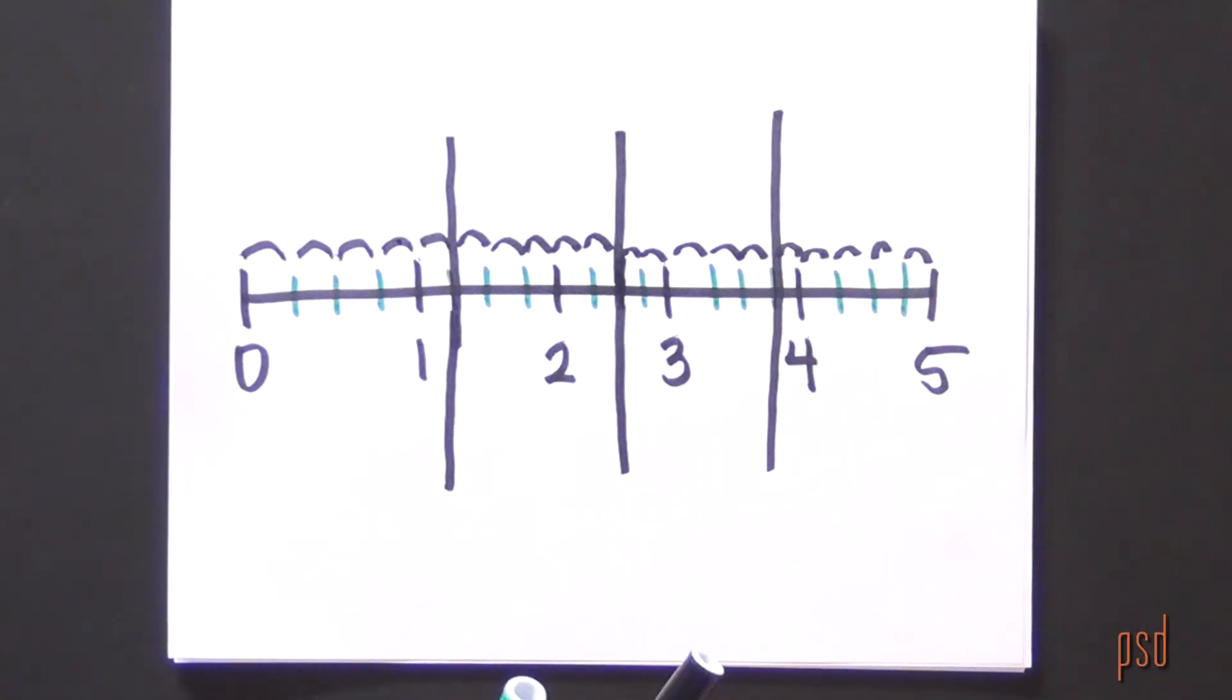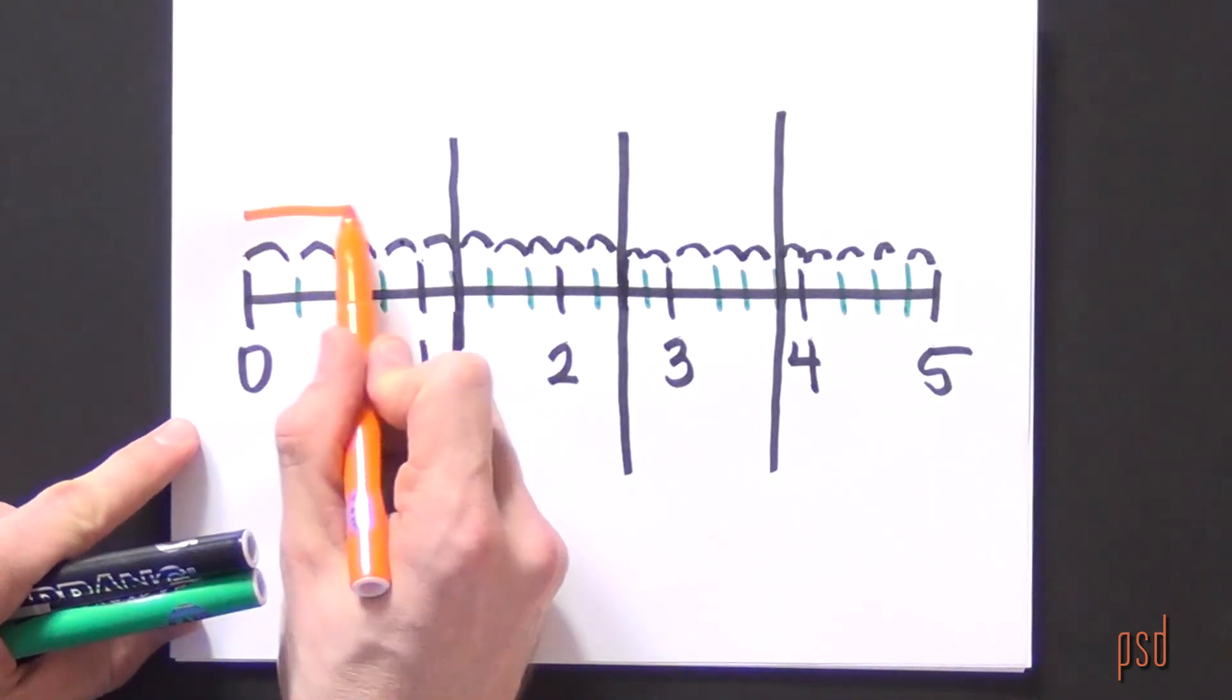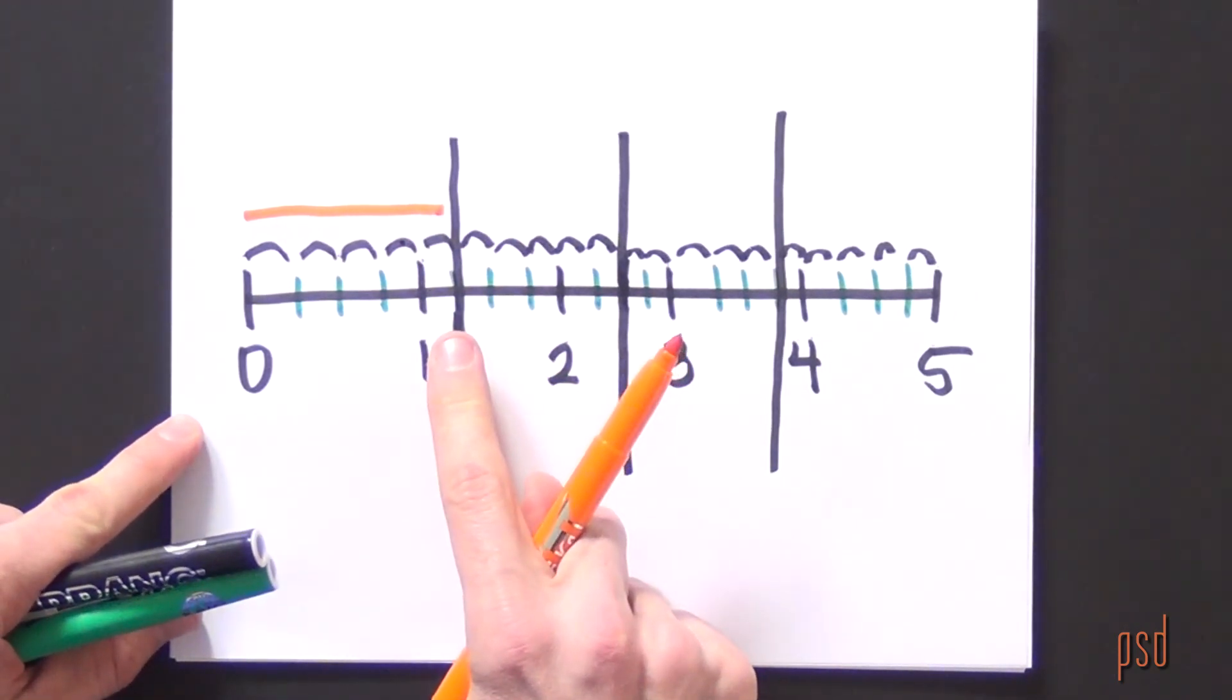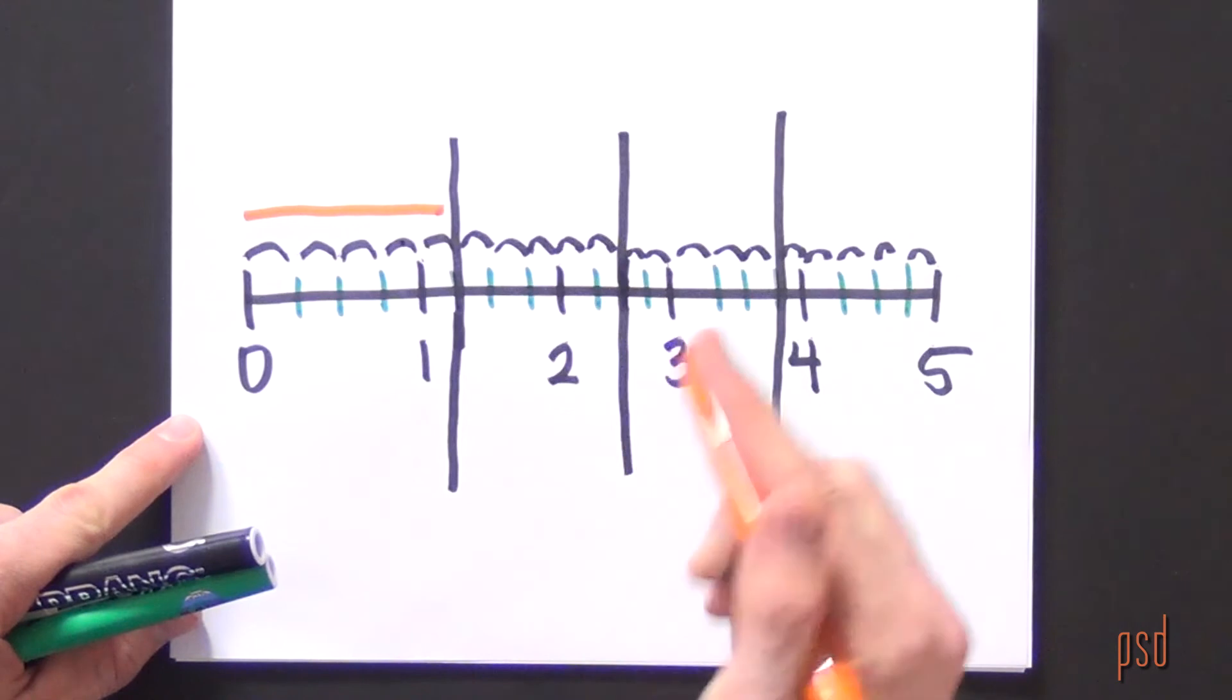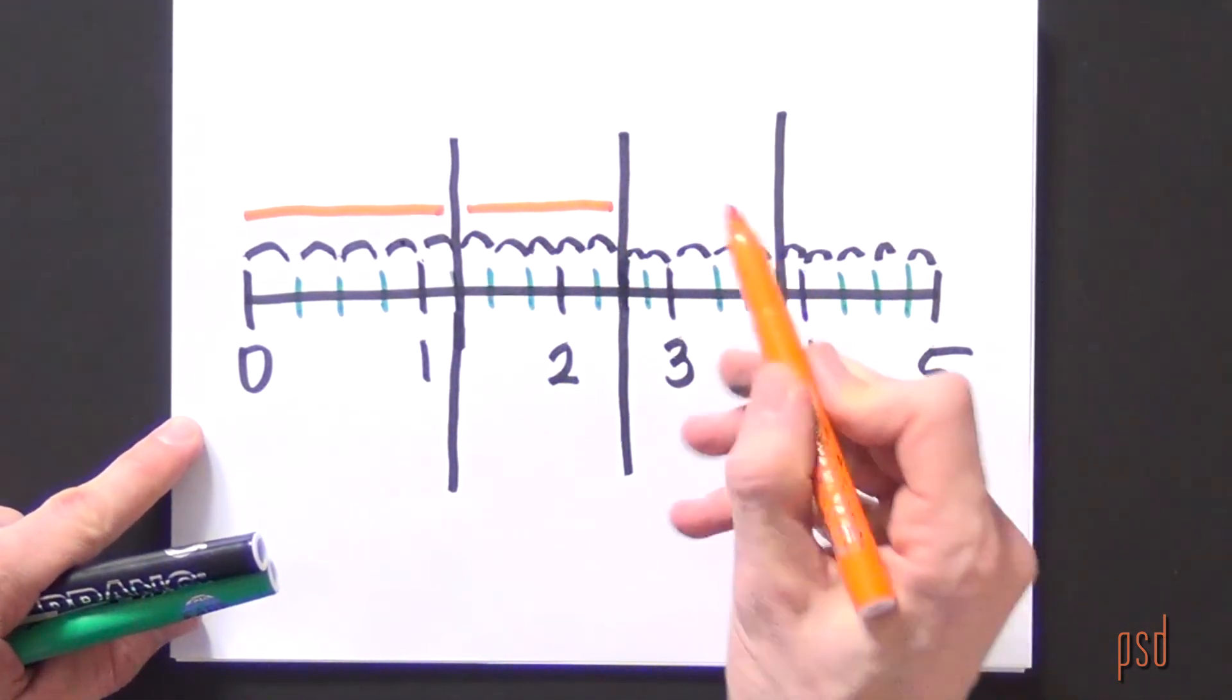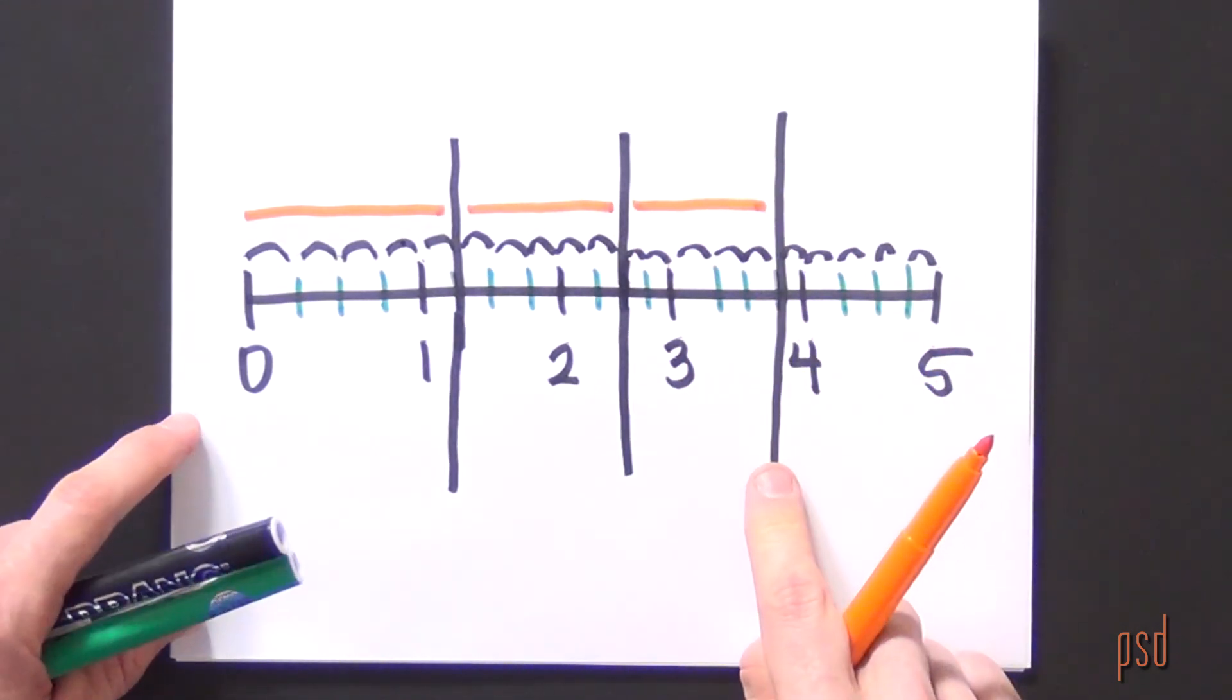So, the question asks, he used three-fourths of the string for a project. So, how much string did he use? Let me pull out another color. This distance from zero to one and one-fourth represents one-fourth of the five. This represents two-fourths of the five. This represents three-fourths of the five.